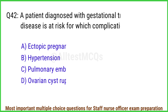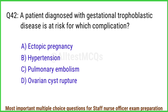Q42. A patient diagnosed with gestational trophoblastic disease is at risk for which complication? The right answer is option B: Hypertension.